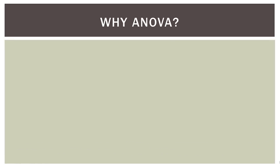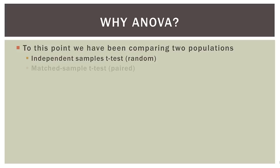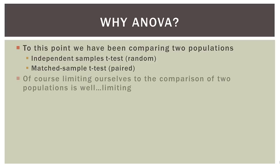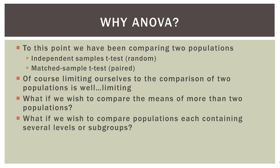So the first and most obvious question is, why ANOVA? Up to this point, we have been comparing two populations — the independent samples t-test, where we compare two random samples, or the matched sample t-test, where each measurement is the same person or machine. But limiting ourselves to the comparison of two populations is limiting. The world is much more complex than just two things. What if we wish to compare the means of more than two populations, or compare populations each containing several sublevels or groups? Well, enter ANOVA. ANOVA, the acronym, comes from the phrase analysis of variance, and it greatly expands what we were able to do in statistics.